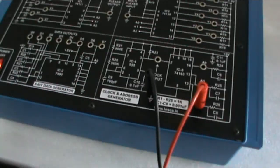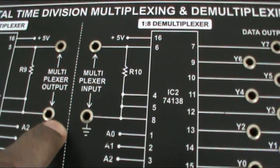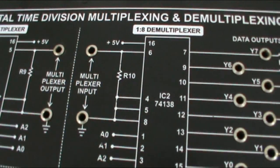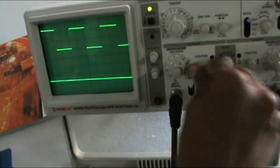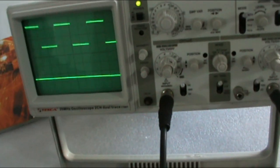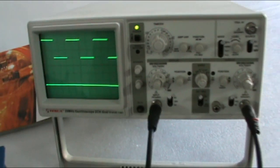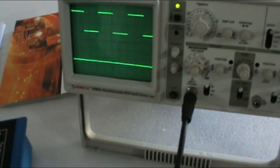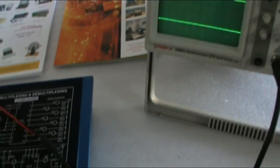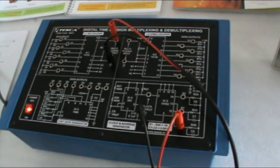This is the second channel of the CRO. This is the 8-to-1 line multiplexer output. Connect the second channel of the CRO between these two terminals. Apply a high signal to the 8-to-1 multiplexer inputs one by one and observe the multiplexer output to see how the total time is divided by each channel with respect to the address generator.